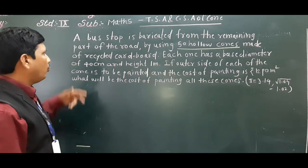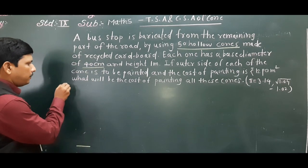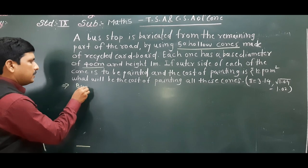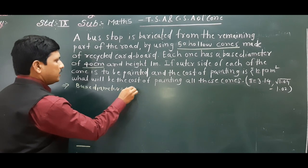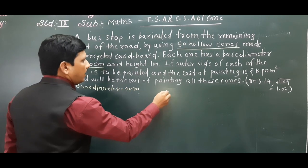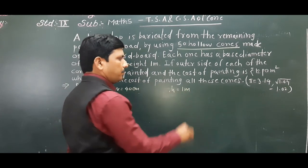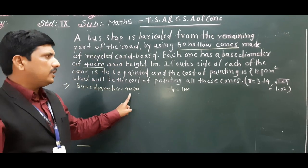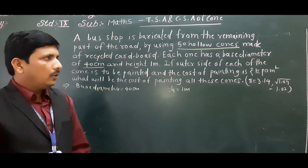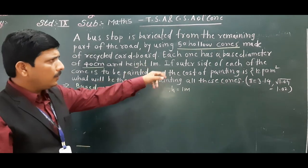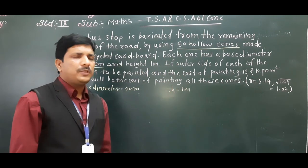Base diameter is given as 40 centimeters and height h equals 1 meter. This is given in centimeters and height is given in meters, so we need to make the units the same.